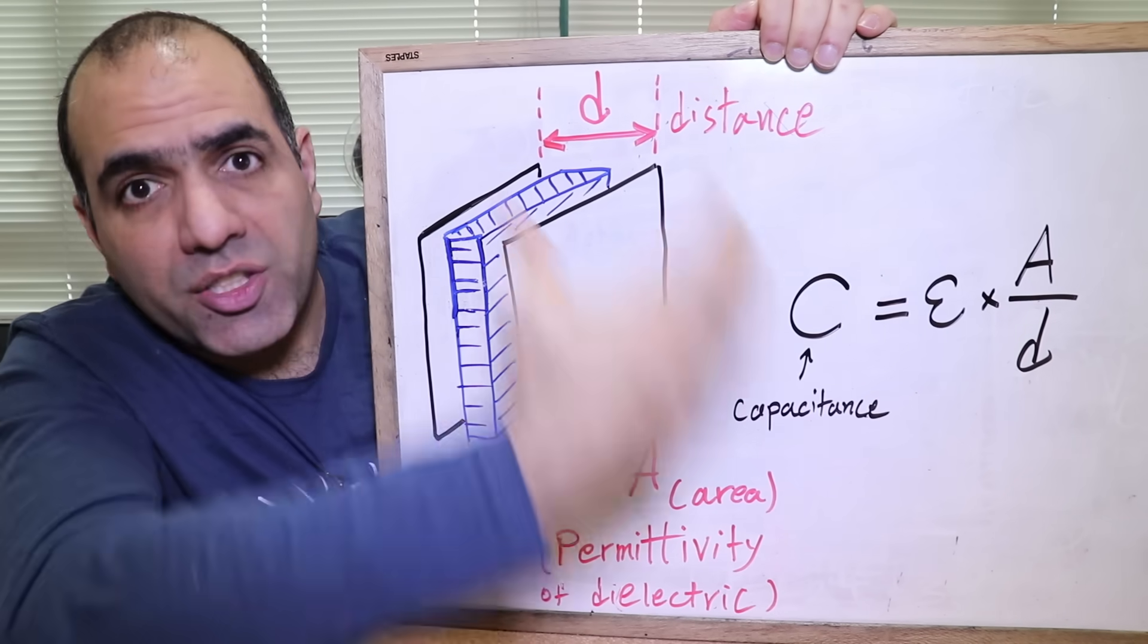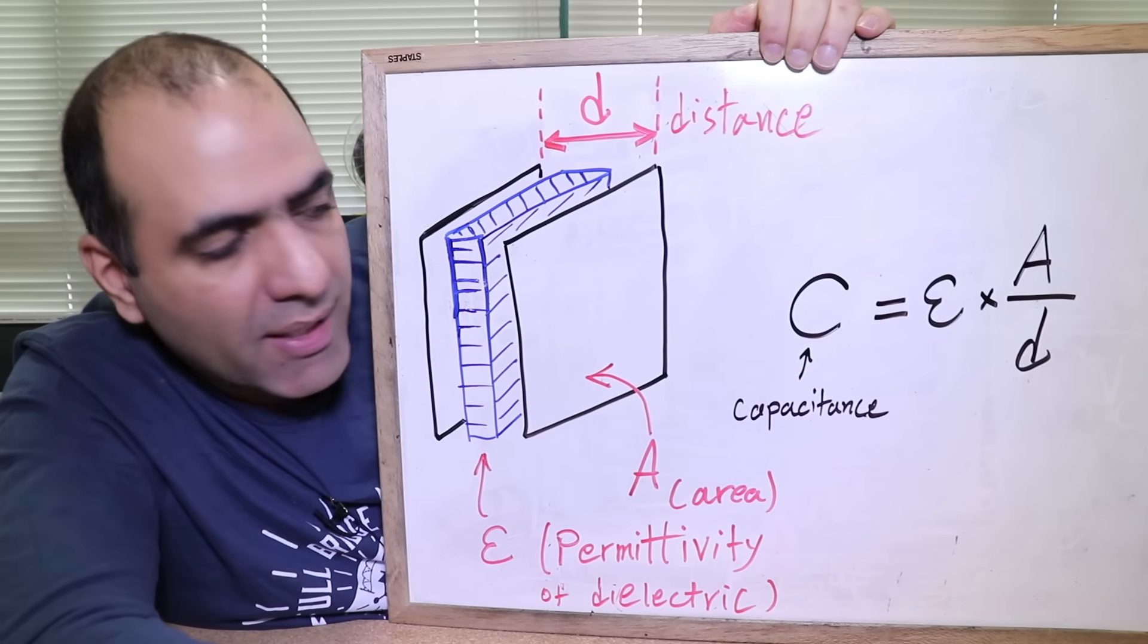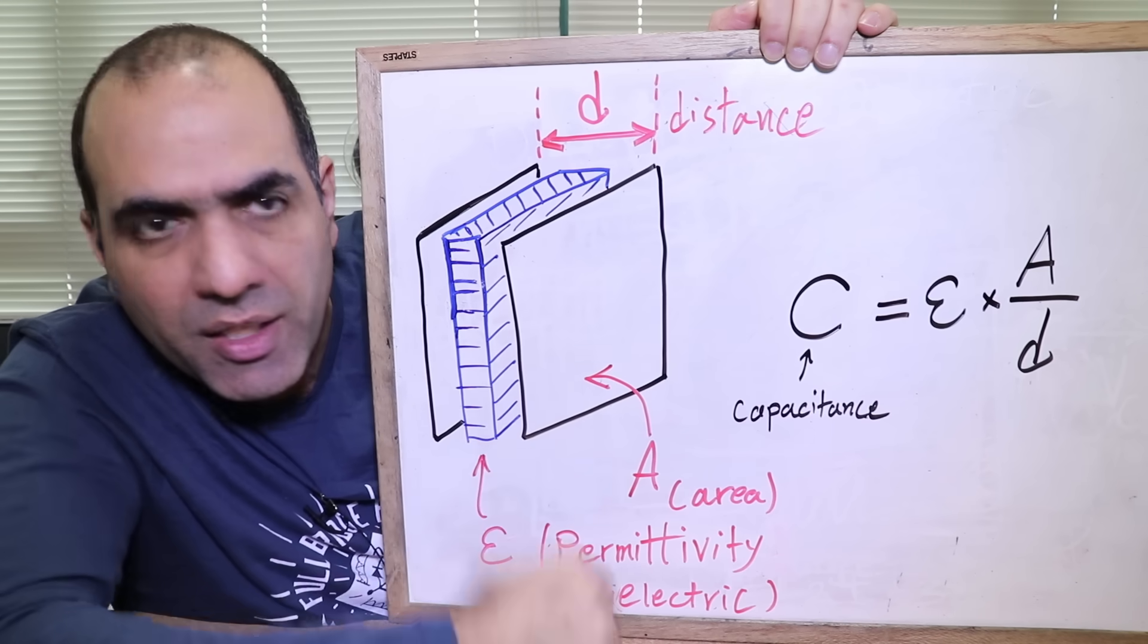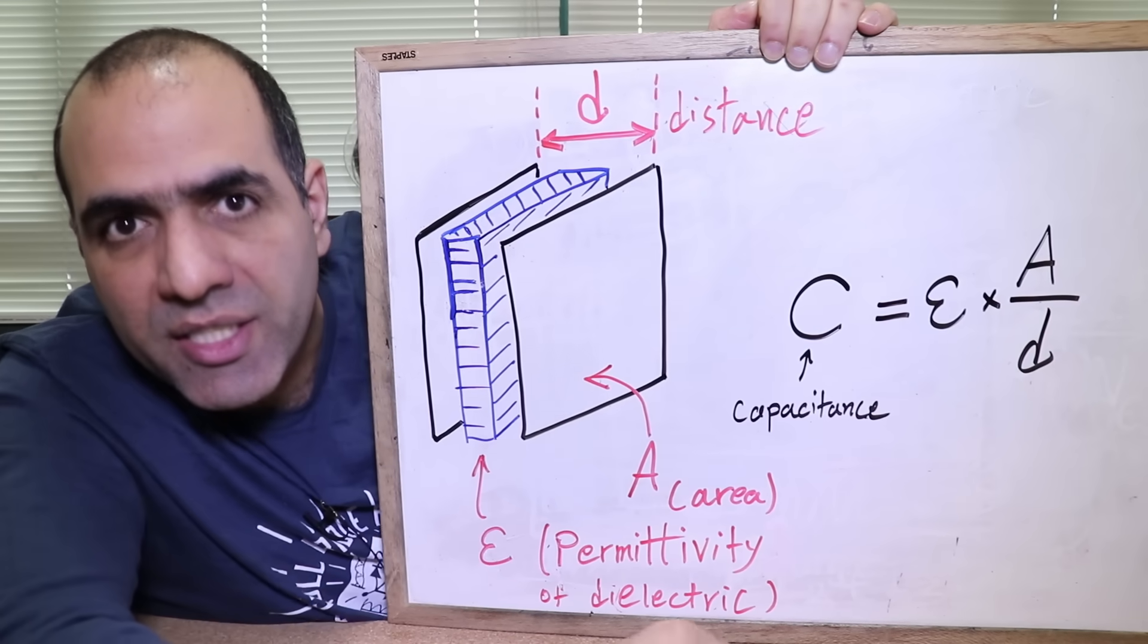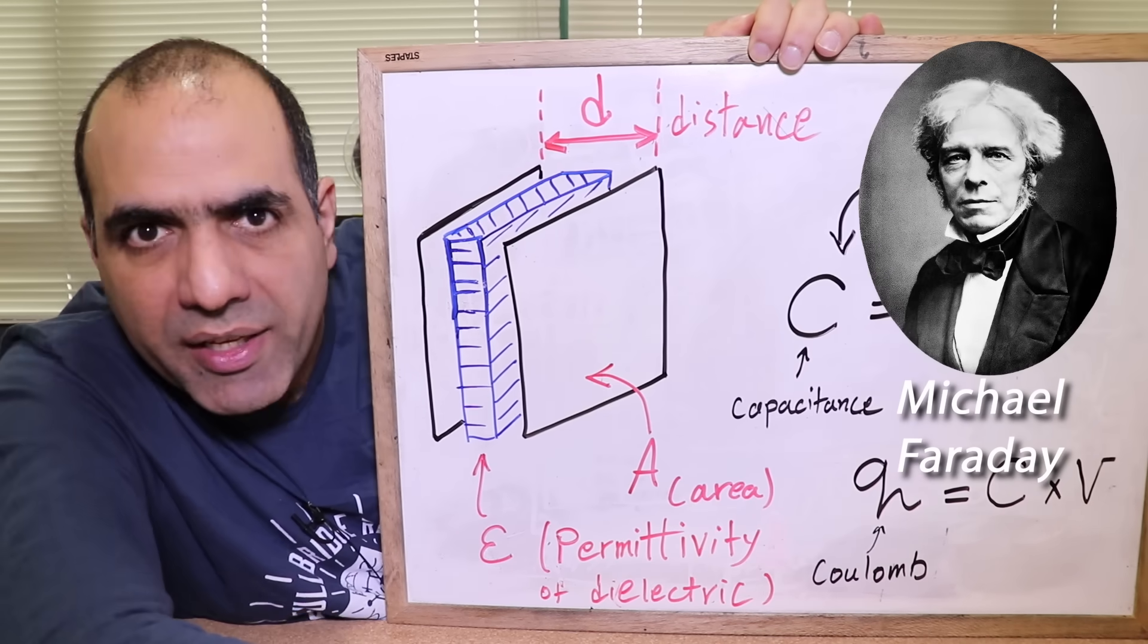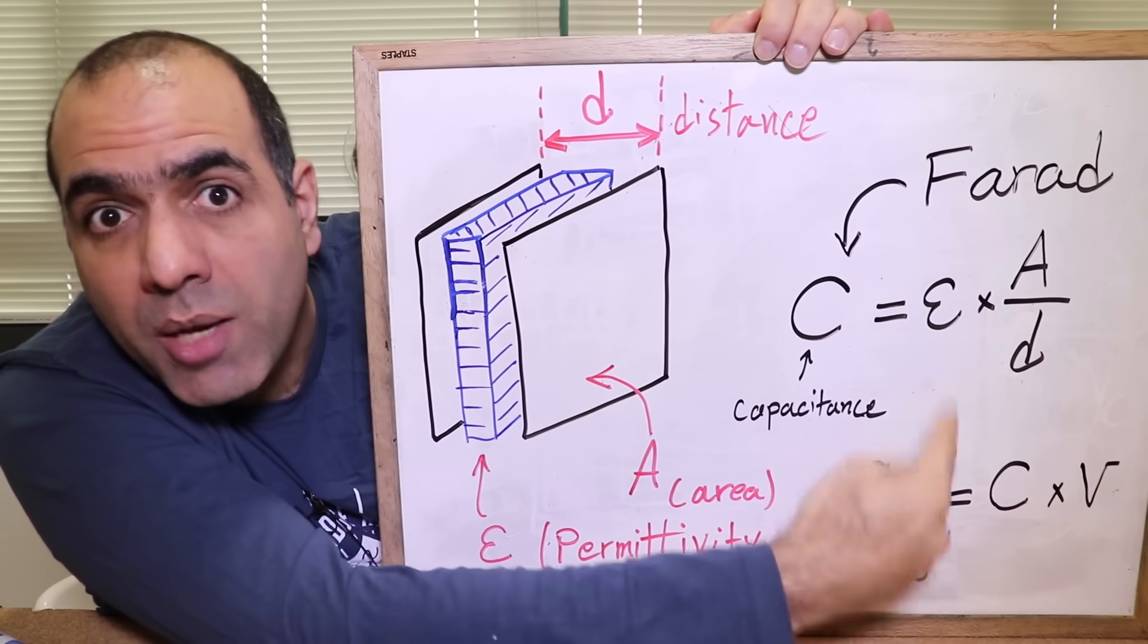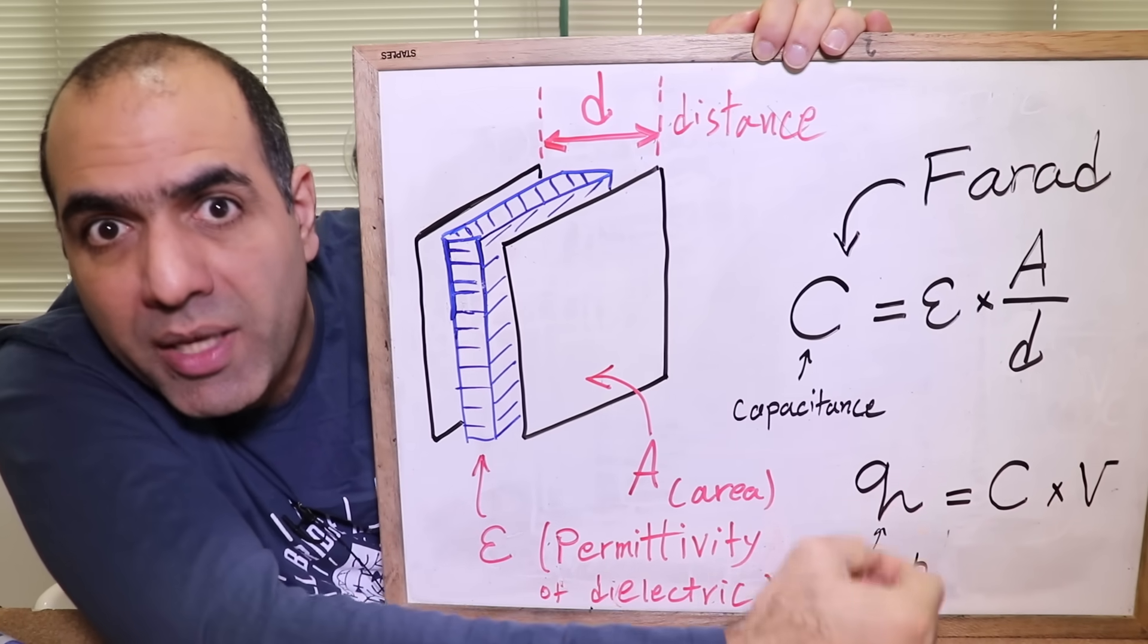And also, the larger the plates, the more charges can fit in them and so the higher the capacitance. So the capacitance is equal to epsilon, which is a constant for dielectric permittivity, times the area of the overlapping plates divided by their distance. The unit of capacitance is farad, named after Michael Faraday, and the amount of charge in coulombs you can put in a capacitor is equal to its capacitance times the voltage across it. So more voltage or more capacity means more charge.